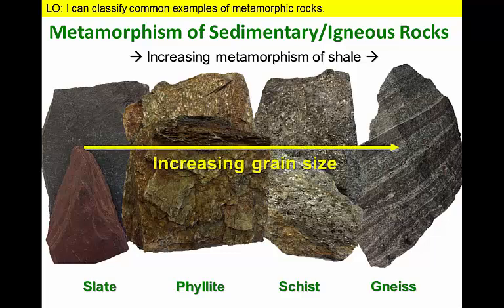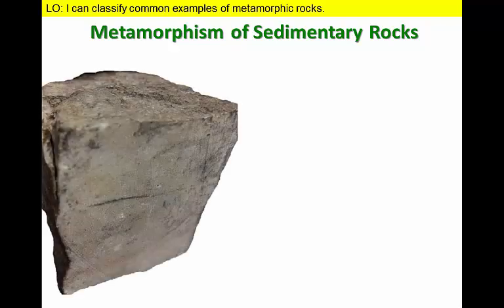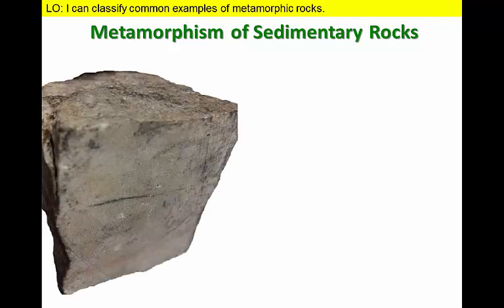During this progression, the size of grains in each rock would become larger and the rocks would exhibit a well-defined foliation, as the clay minerals in the shale would be readily transformed into tabular silicate minerals. But what happens if the original rock does not contain clays or other tabular minerals?